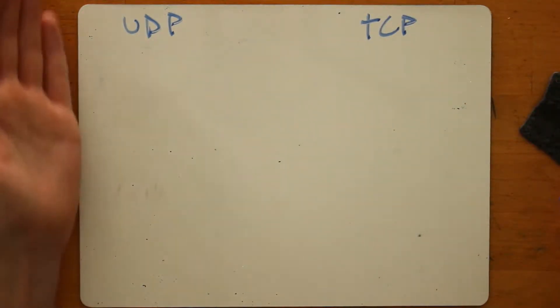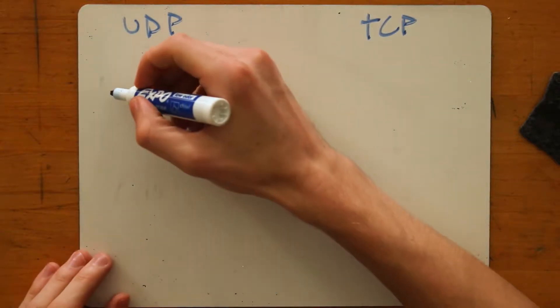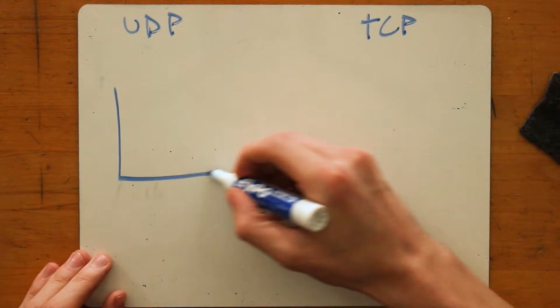So UDP, User Datagram Protocol, is dead simple. It is really, really small. You basically get nothing from it. It is four values.